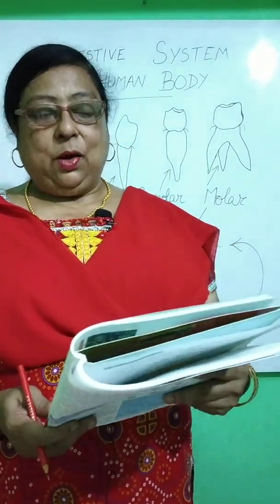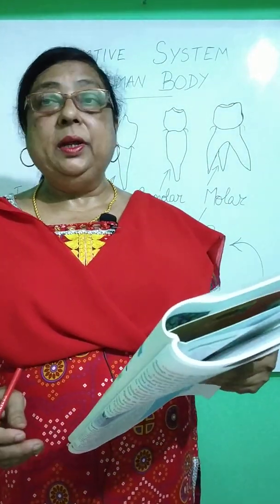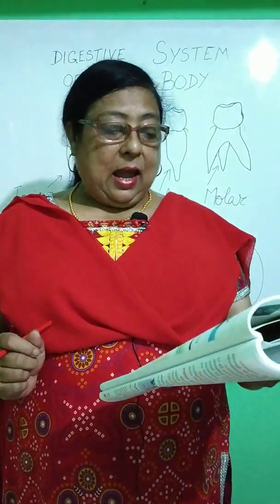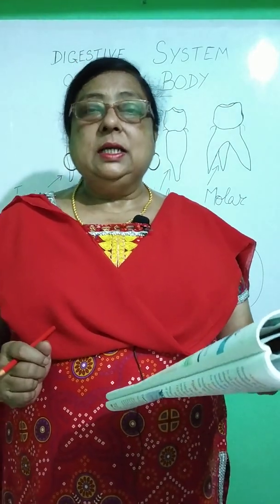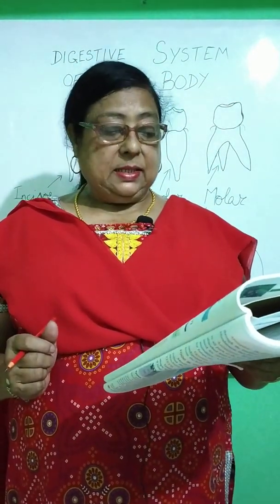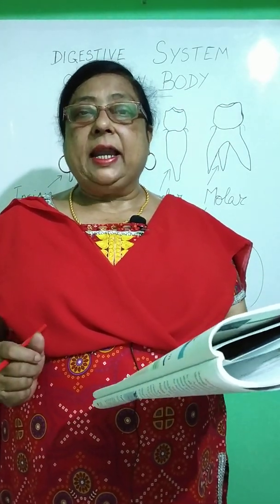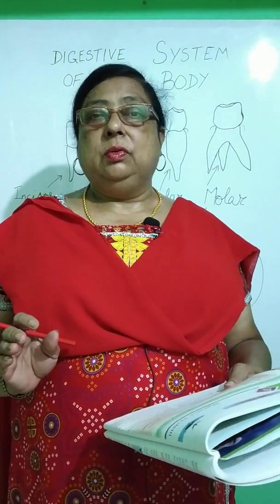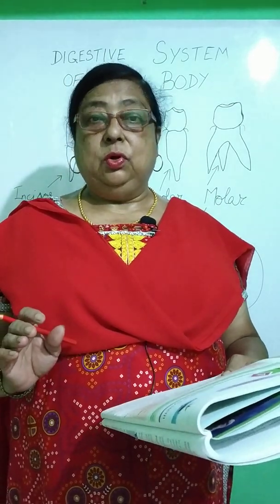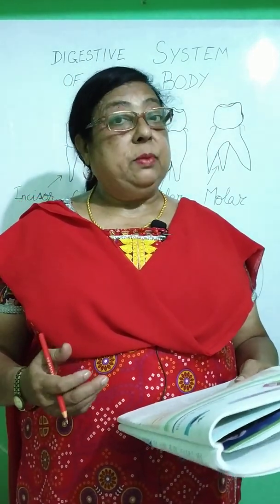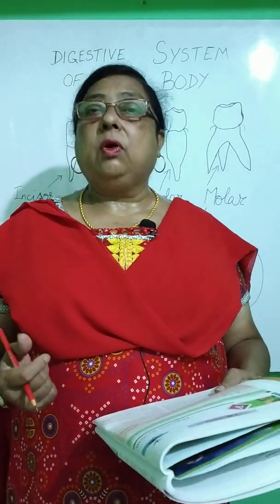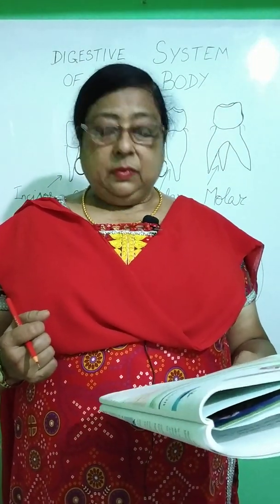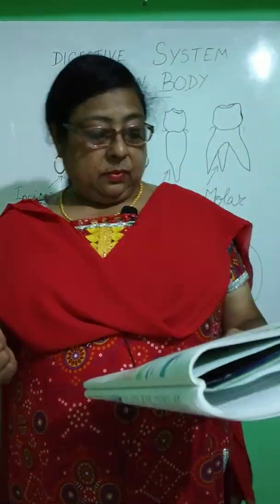Good morning children. I shall be dealing with the digestive system in the human body. We all require food to remain healthy and energetic. Food is a combination of various complex substances made up of inorganic and organic components. Human beings and animals cannot make their own food; we are dependent on plants or other animals for our food supply. This food we take comprises seven components.